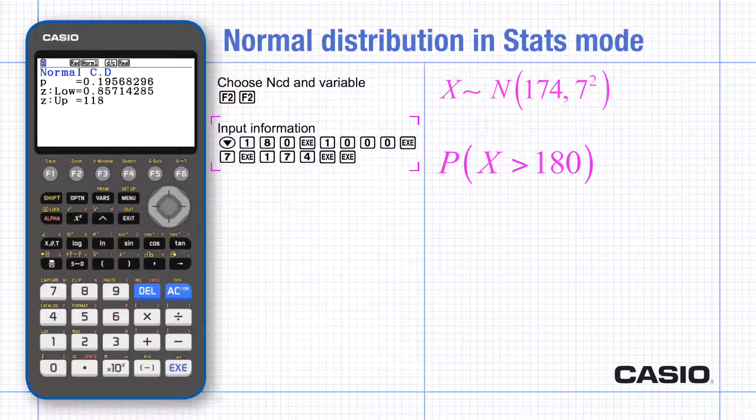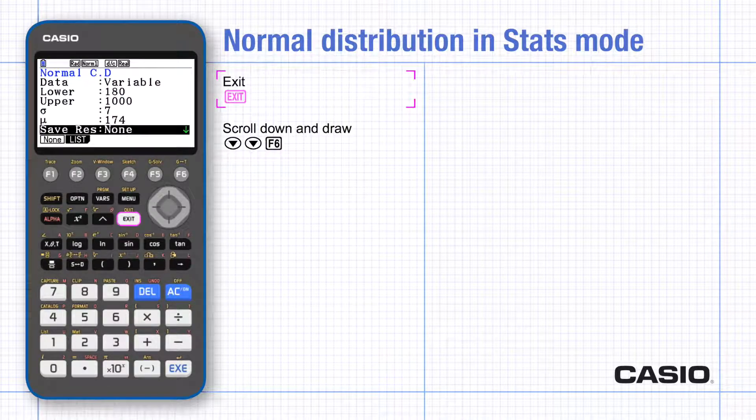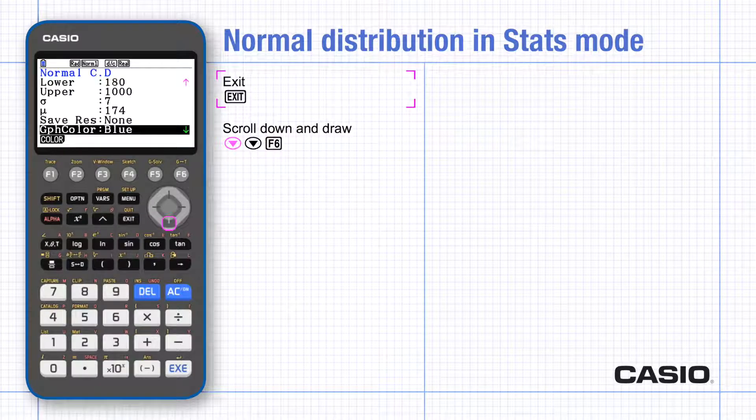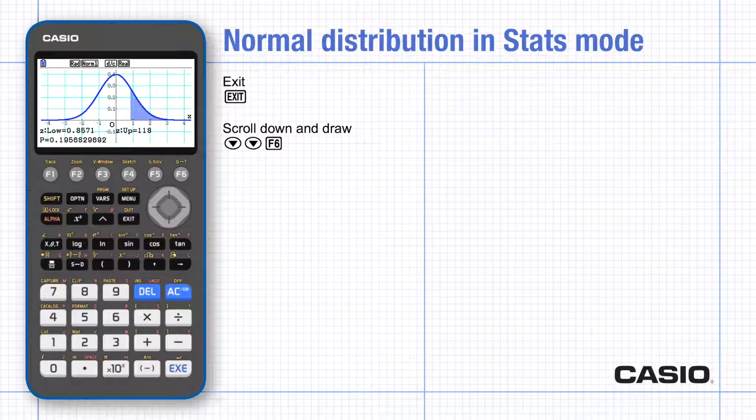A useful checking strategy is to view this in a graph which illustrates the probability that you've found. Exit and scroll down and press draw. Notice the graph is the standardized normal distribution with the boundary values clearly marked.